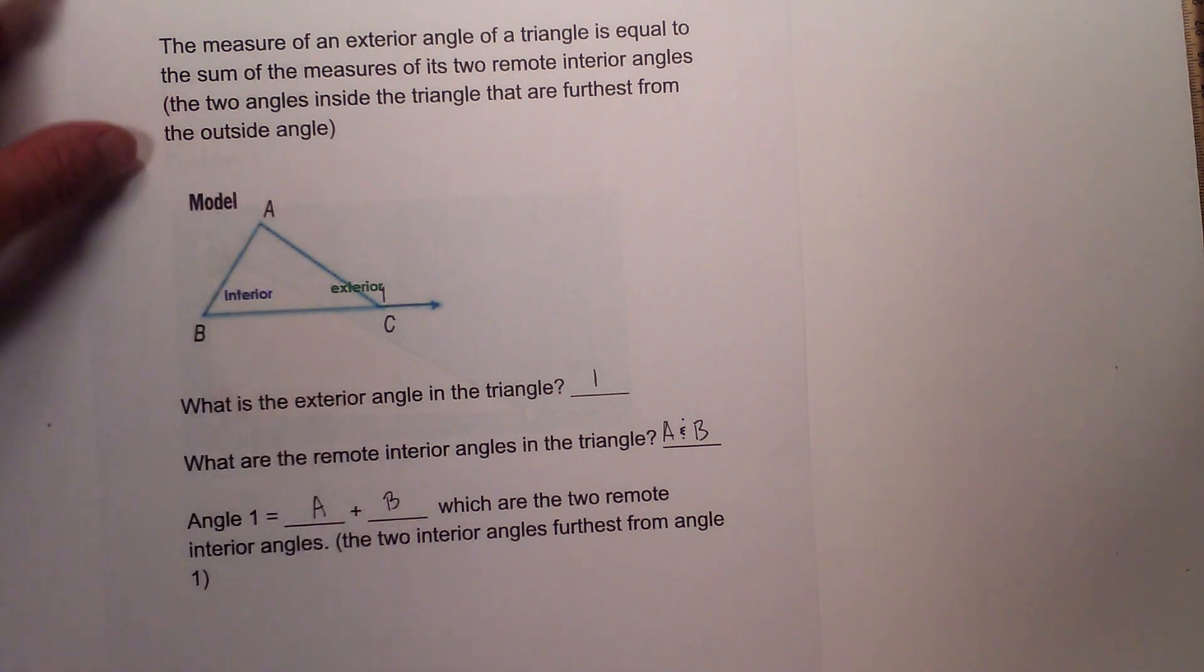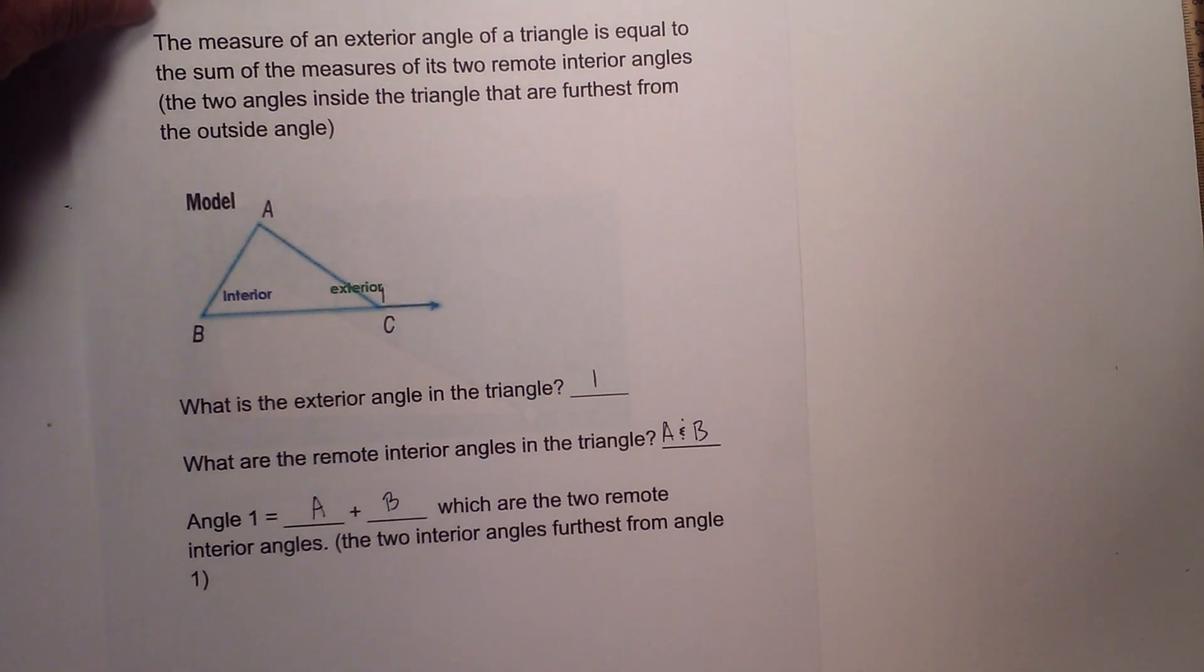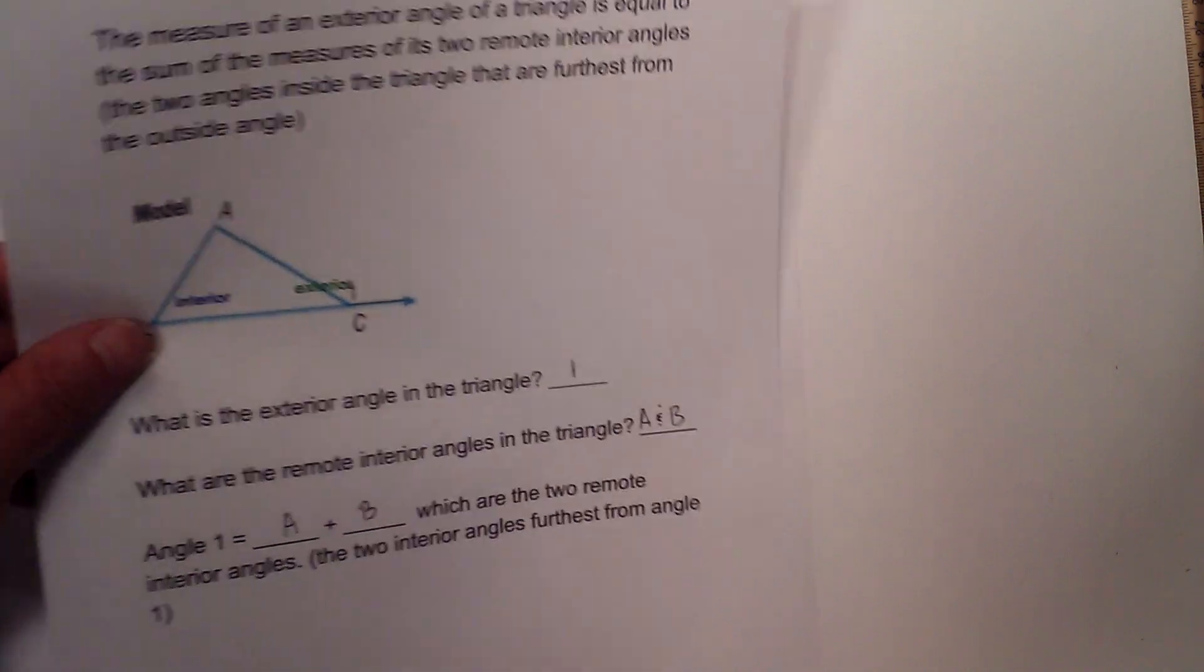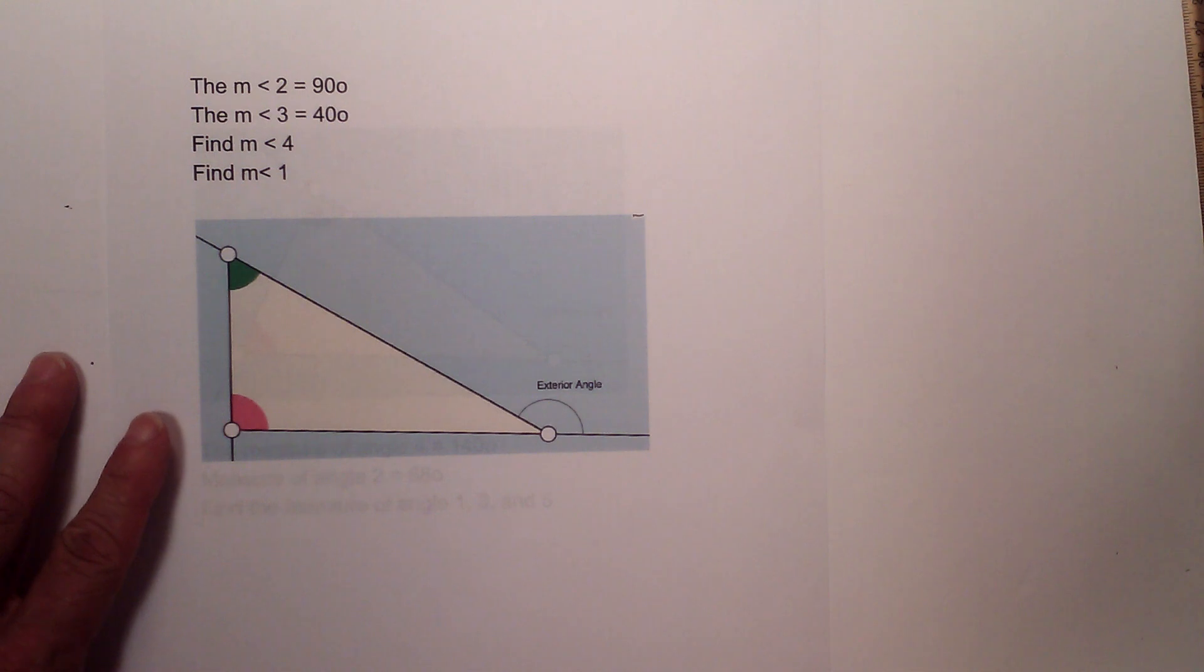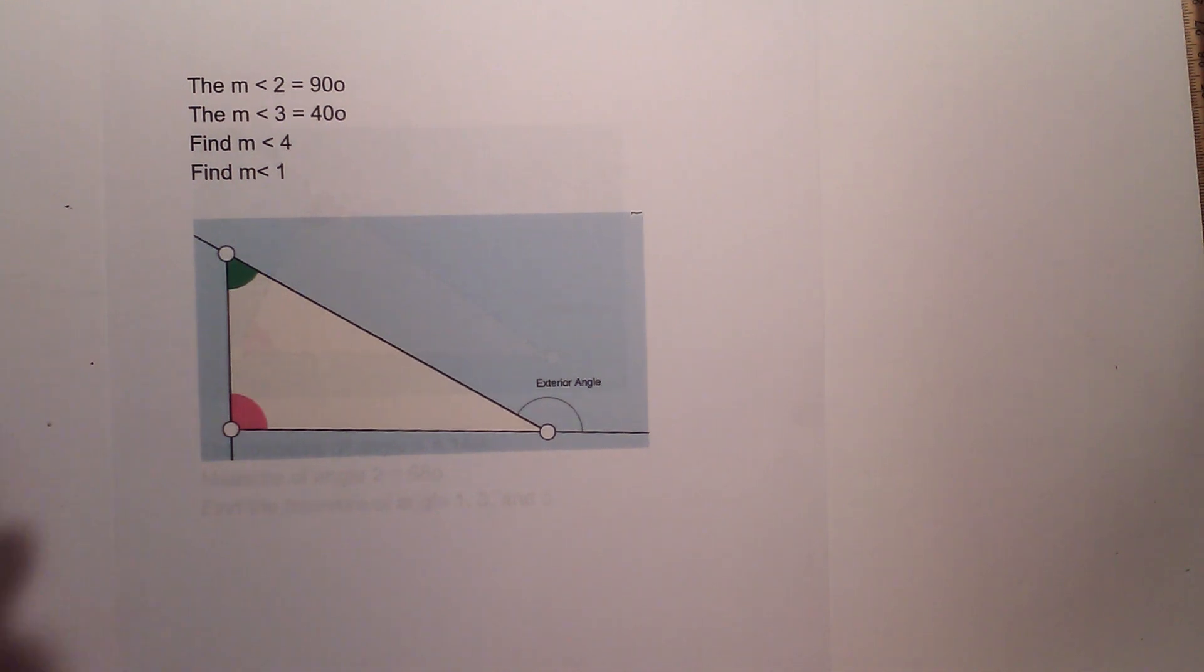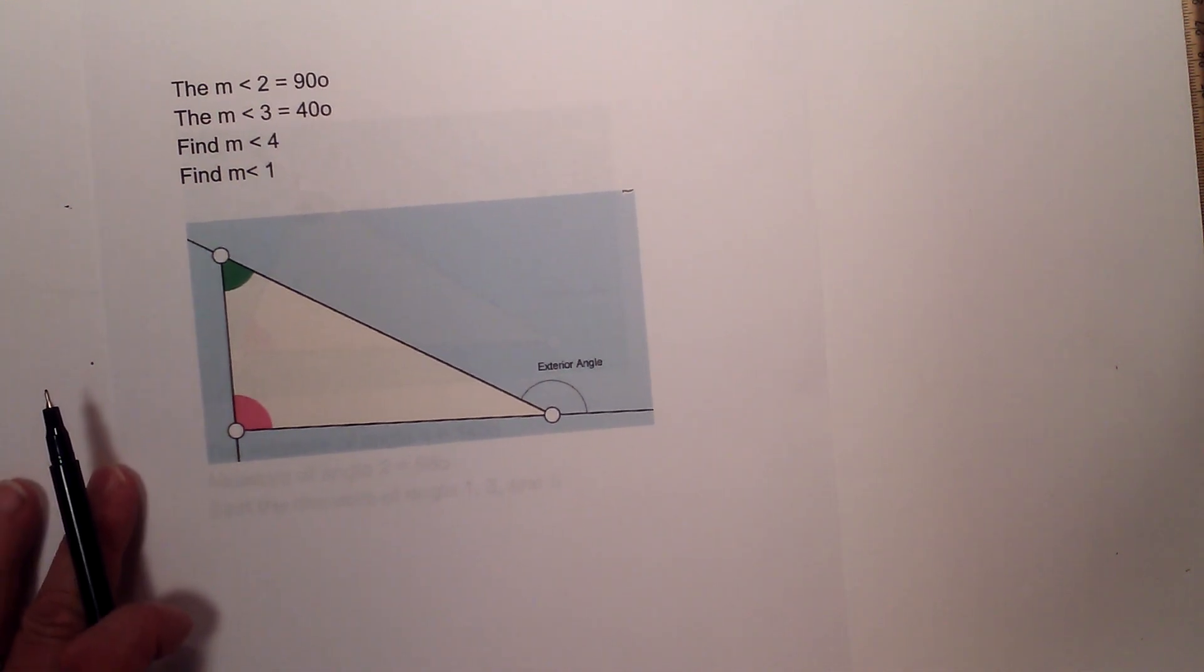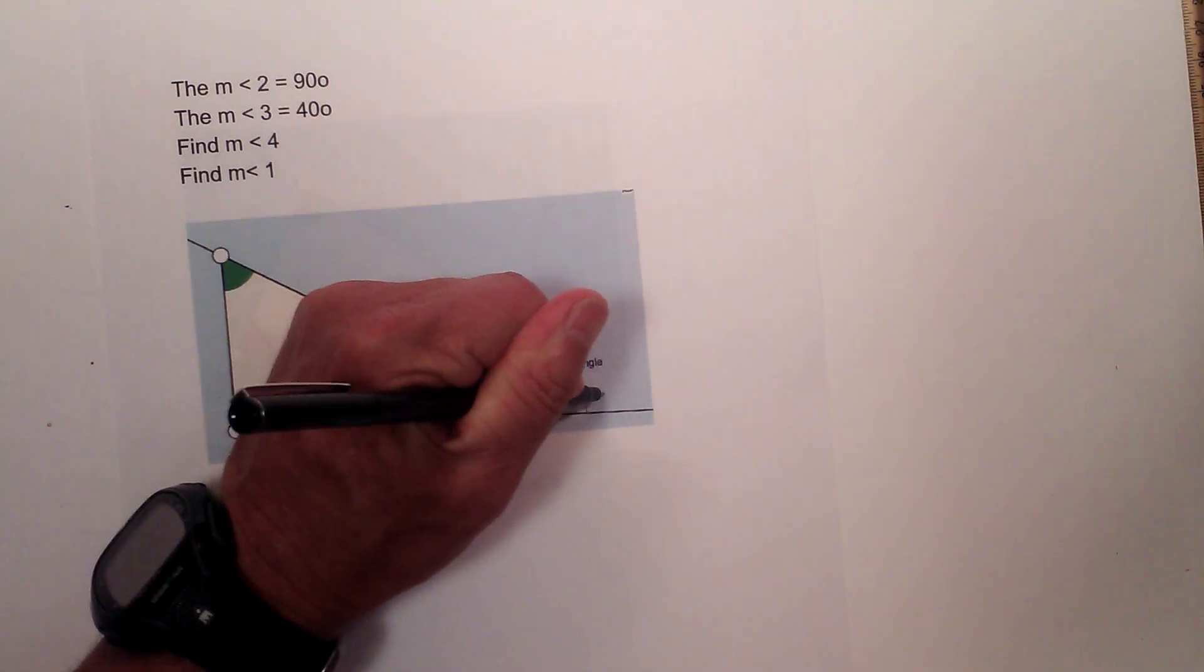Now we can use this to find some missing angles. Let's look at a couple example problems and see what we can do from here.